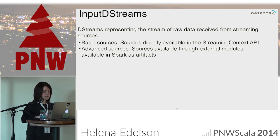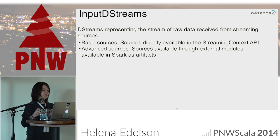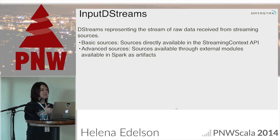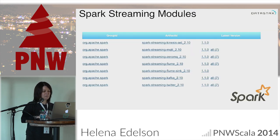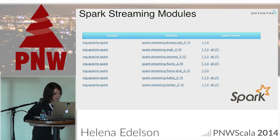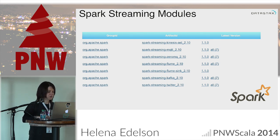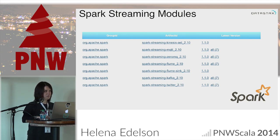I'm actually adding a Cassandra input DStream for the connector, because right now you can read and write to Cassandra from Spark in the Spark context and streaming context, but the ability to asynchronously consume data from Cassandra would be really nice. The modules currently in Spark Streaming include Flume, Kafka, Twitter, 0MQ, Kinesis, and someone has a community version for RabbitMQ as well.